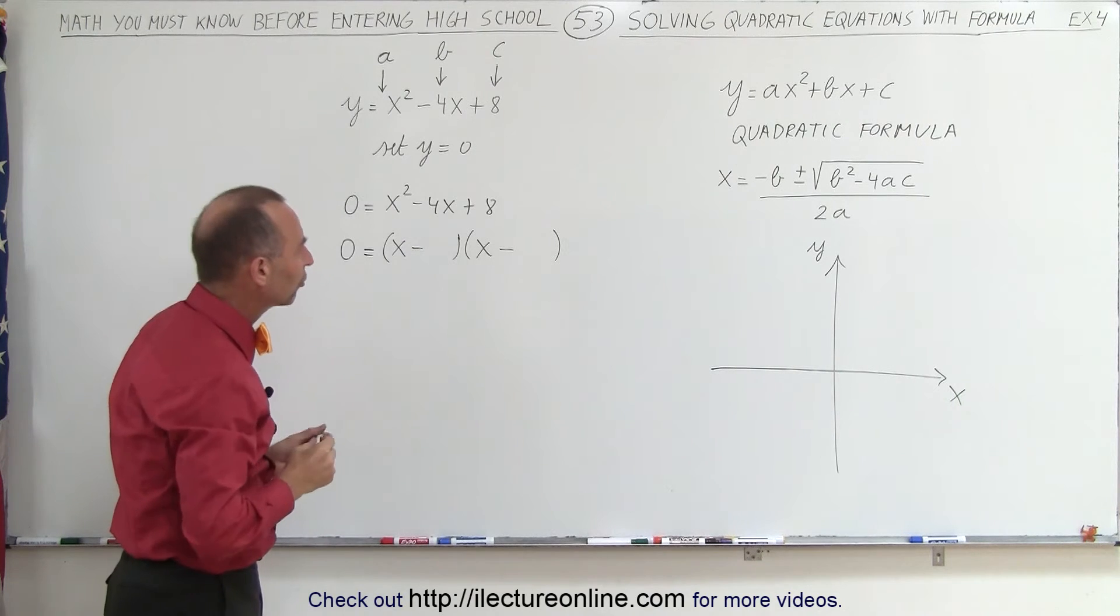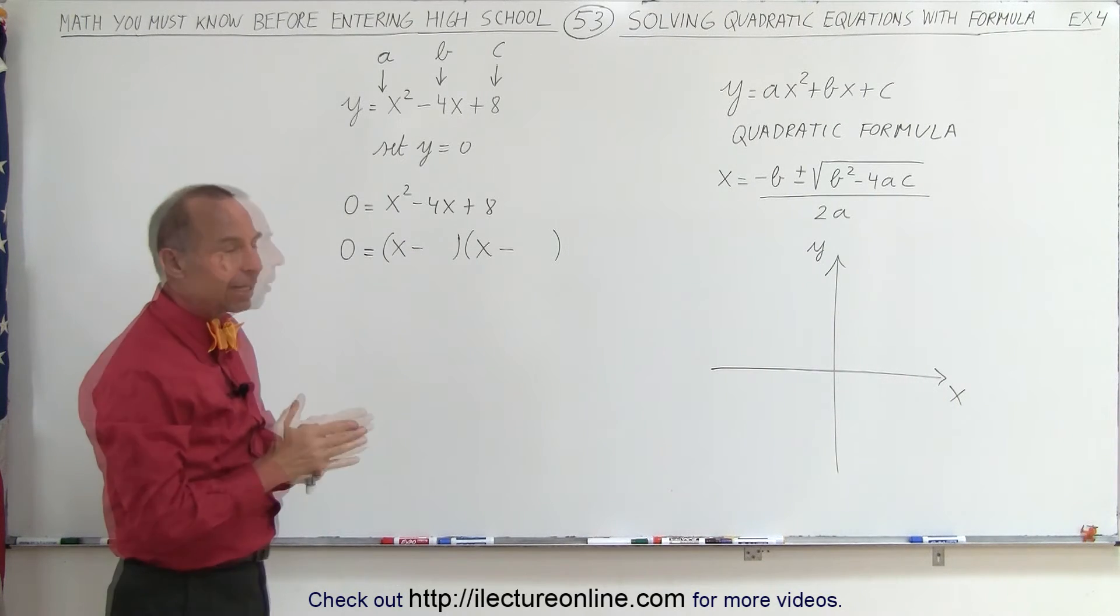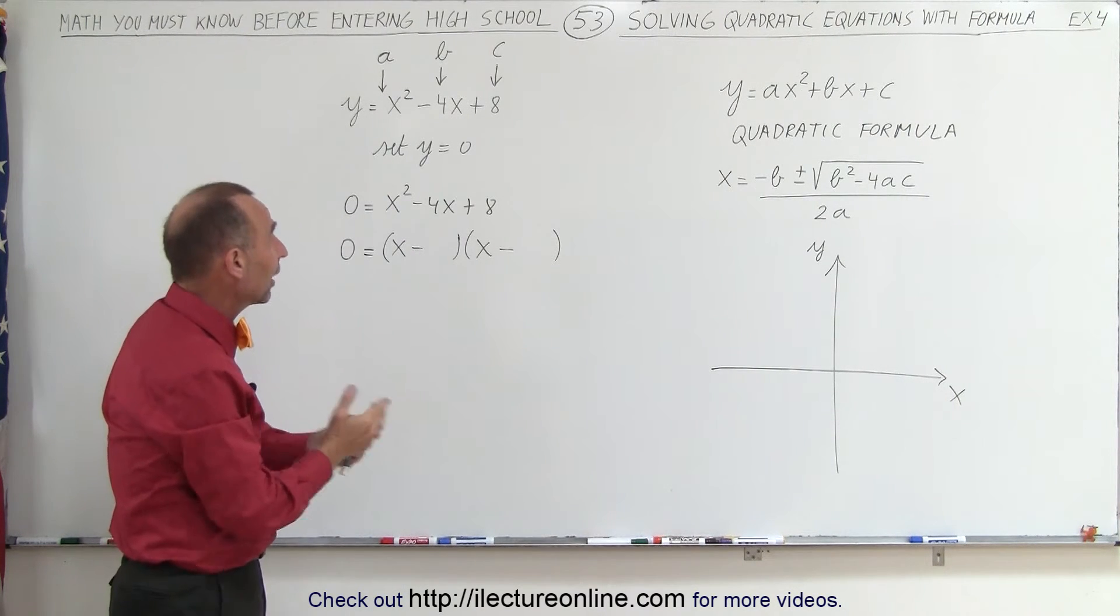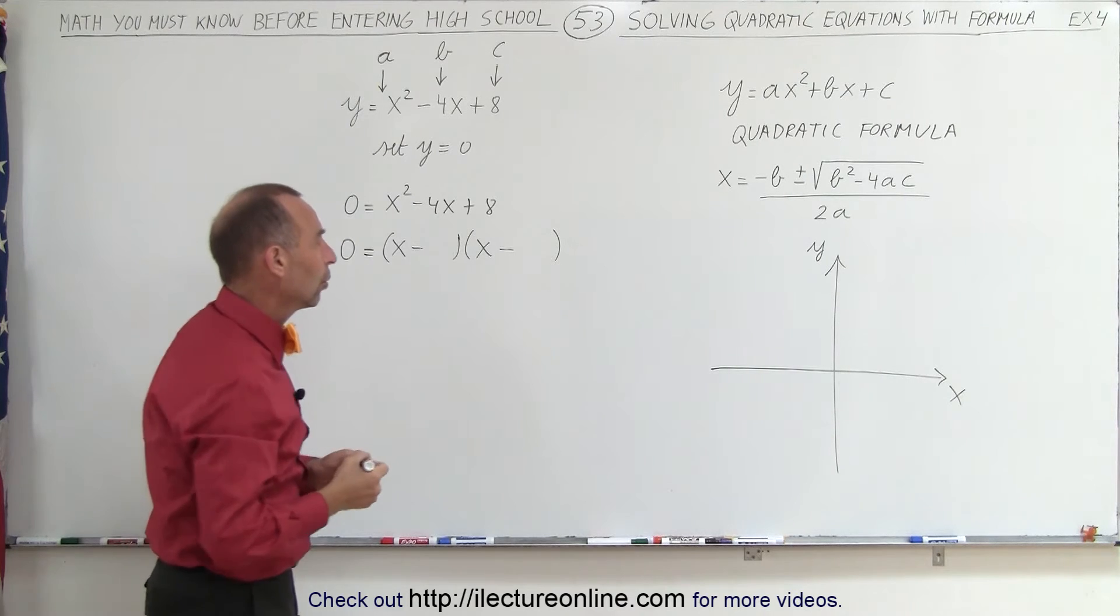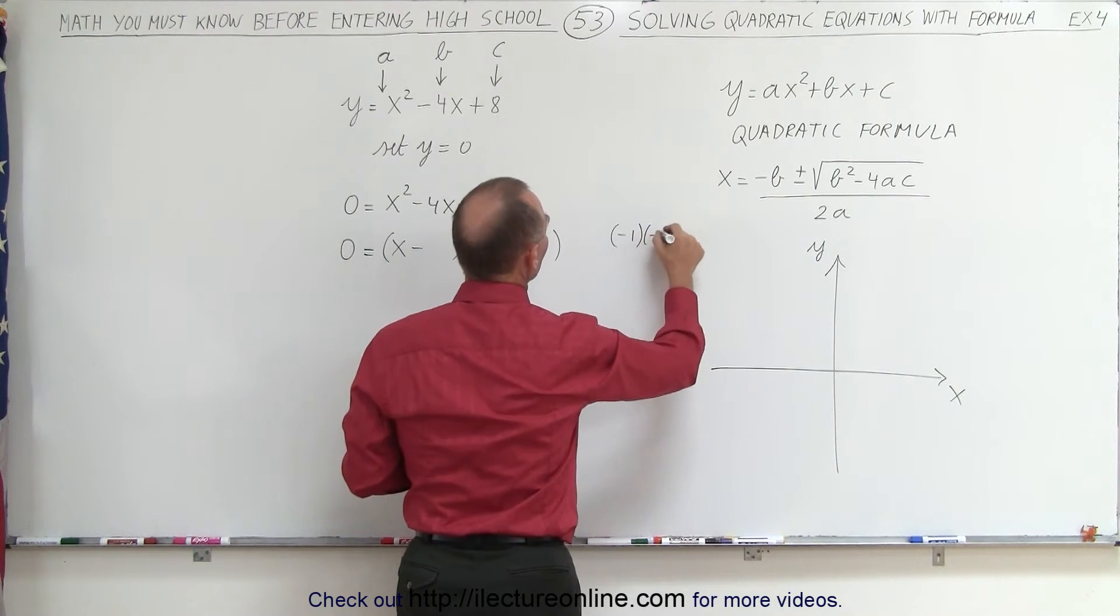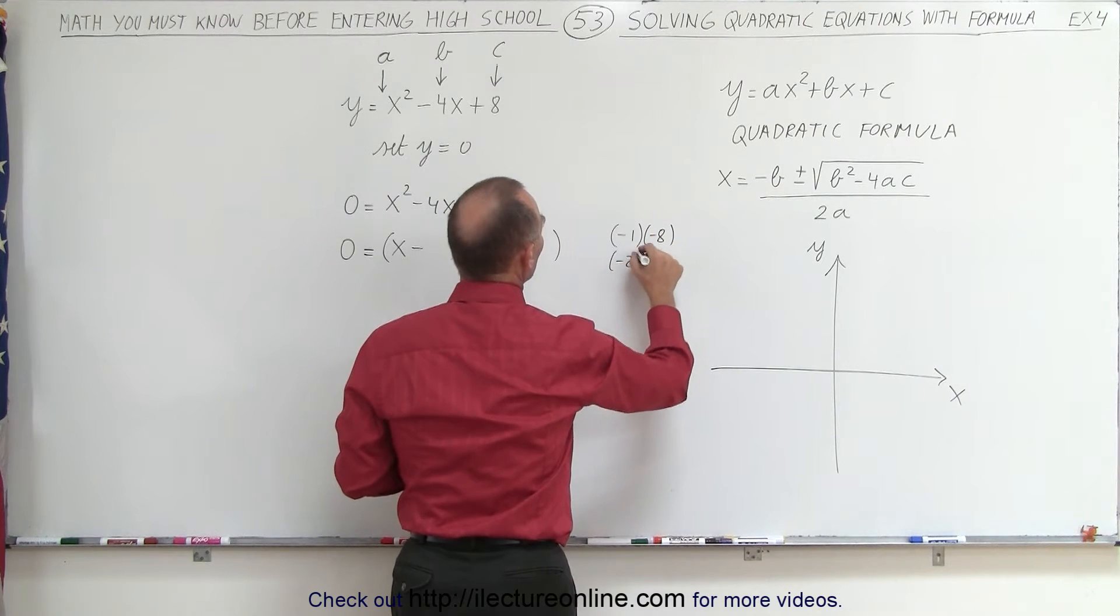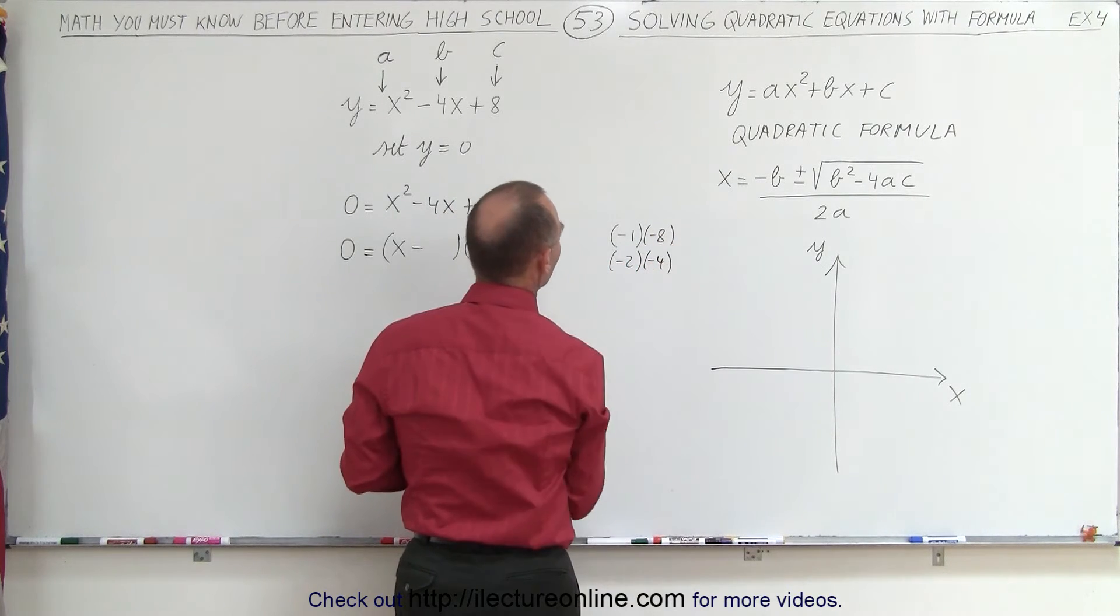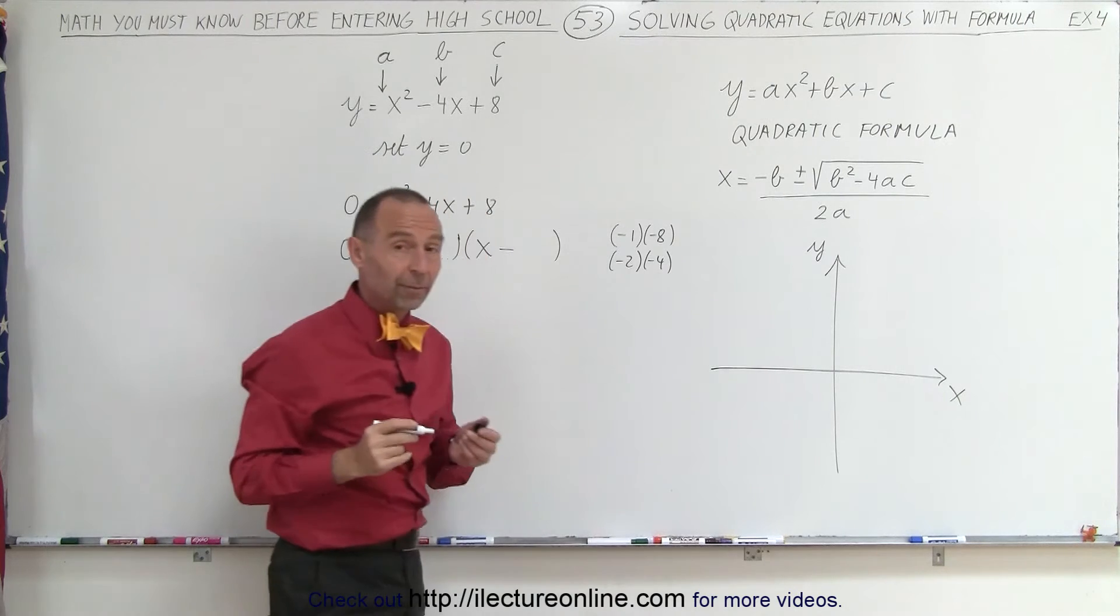So now we're looking for two numbers. When I multiply, I get positive 8, and when I add them together, I get a negative 4. So let's see, what are the possibilities? We have negative 1 and negative 8. We have negative 2 and negative 4, and those are the only two possibilities.